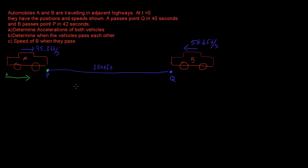Everything with A is going to be positive, and most of the stuff with B is going to be negative. P starts at 0 and Q starts at 3200. This is our origin at 0 feet, and Q is just a point on the line 3200 feet away from our origin.